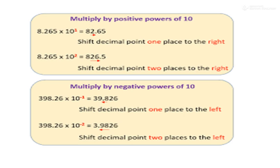Similarly, multiply by positive power of 10. 10 means 10 to the power 1, 1 time. 8.265 x 10 to the power 2 means 100. 826.5. Shift decimal point 2 places to the right. Multiply by negative power means divide. 10^-1, shift left. 39.826 becomes 3.9826.